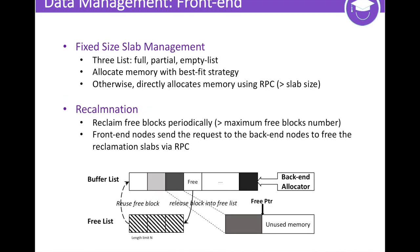The back-end allocator provides fixed-sized slabs to the front-end allocator, and the front-end manages these slabs in fine-grained fashion. The slabs in the front-end are organized in three lists: full, partial, and empty. According to capacity consumption in the corresponding page, we use a simple best-fit mechanism to implement a front-end allocator. When allocation size is larger than the size of a slab, the front-end node directly allocates memory in the back-end using RPC. The front-end node will reclaim free blocks periodically when the maximum free block number is exceeded, then send a request to the back-end to free the reclaimed slabs through RPC.